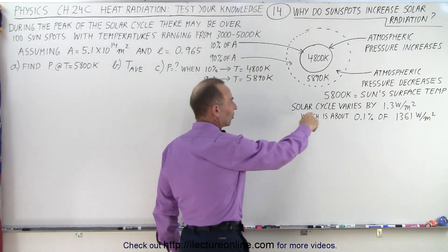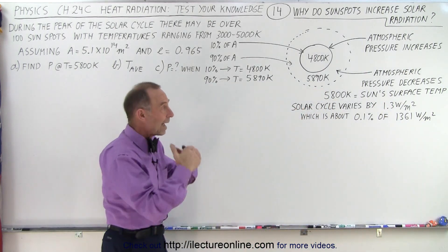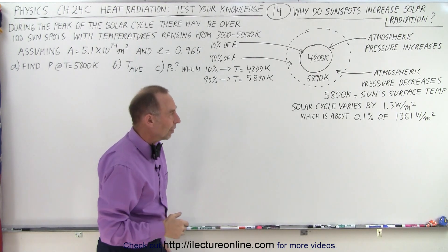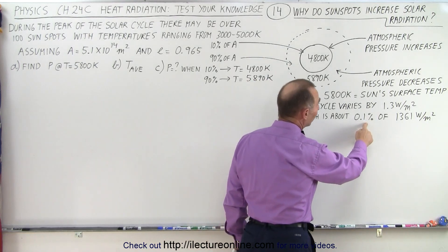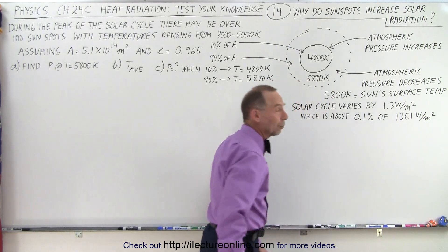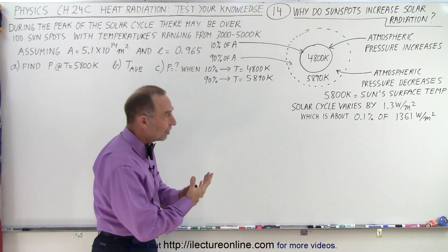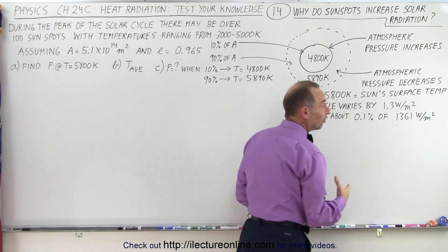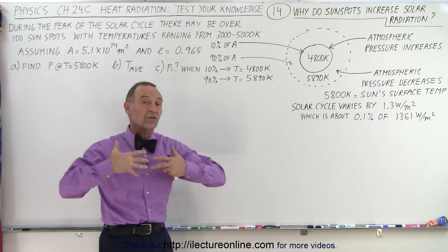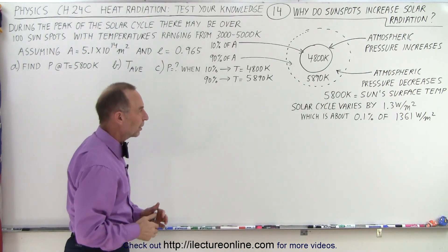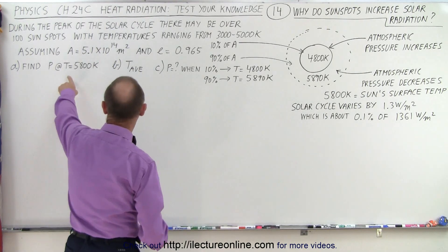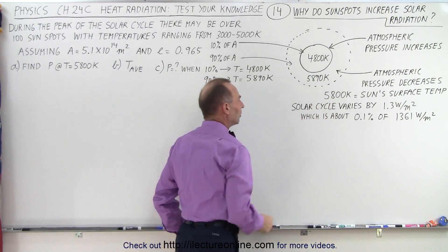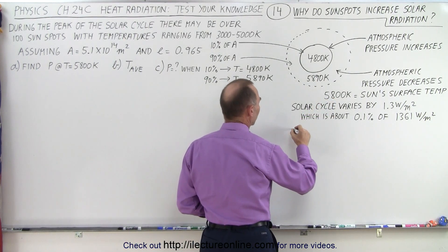We know the solar cycle varies by about 1.3 watts per square meter, so at the height of the solar cycle it puts out a little bit more intensity — about a 0.1 percent change — and the average solar irradiance is about 1,361 watts per square meter. So let's calculate the power of that area of the surface assuming the temperature was entirely at 5,800 Kelvin, using the equation: power equals emissivity times sigma times area times T to the fourth power.